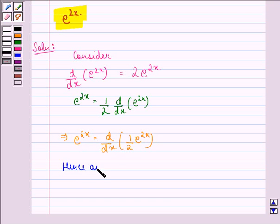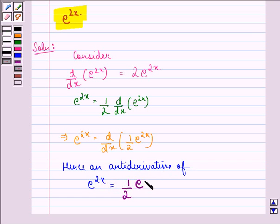Hence, an antiderivative of e raised to power 2x is 1 by 2 e raised to power 2x. So, this is our answer to the question. I hope that you understood the question and enjoyed the session. Have a good day.